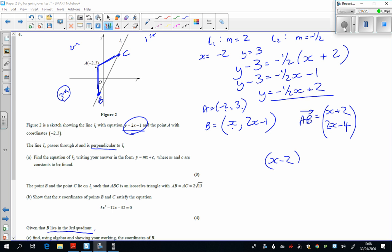So the length of that vector is X plus 2 all squared, plus 2X minus 4 all squared, square rooted. And we know that that's going to equal, what did they tell us? 2 root 13. So we'll go through the algebra and do that in a second.